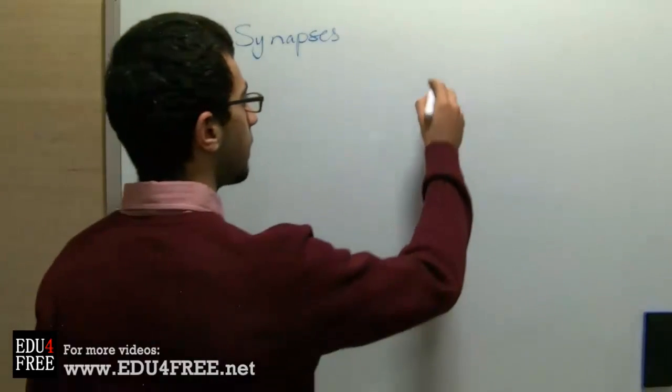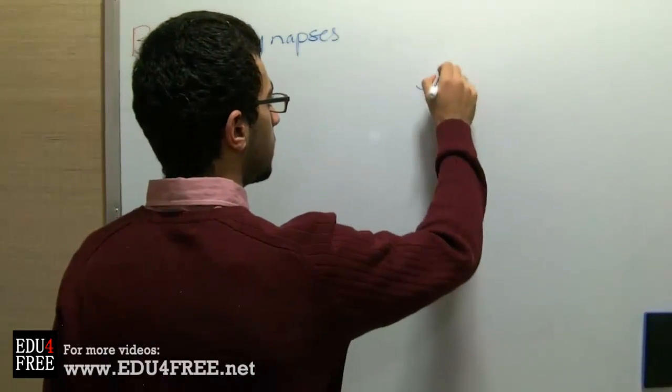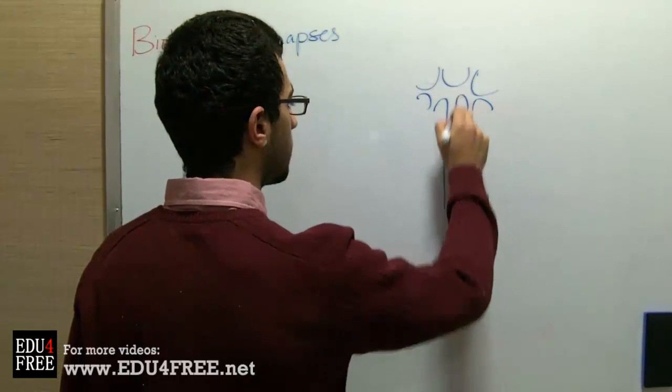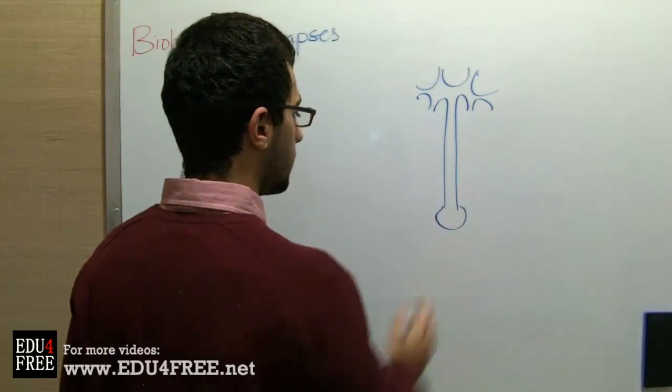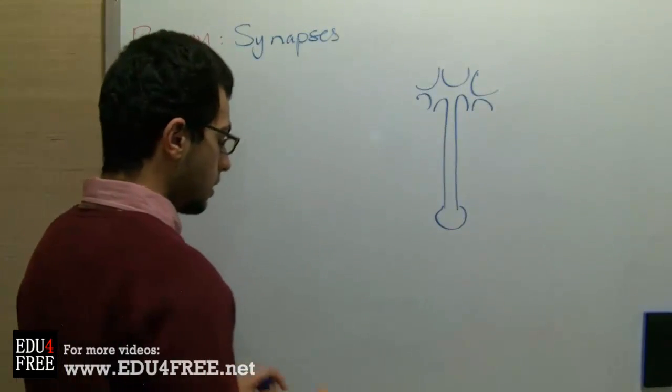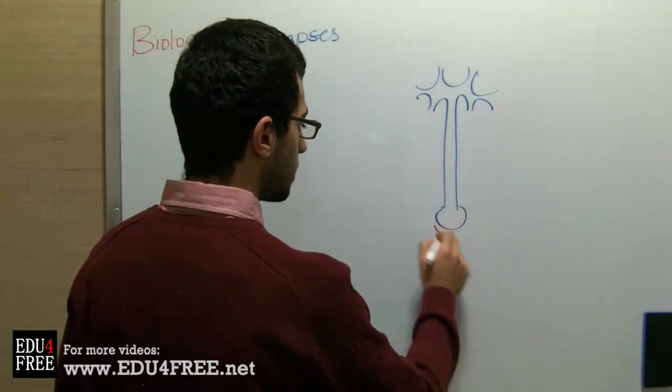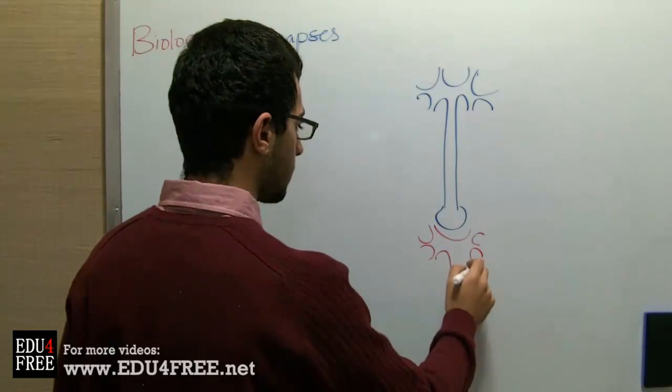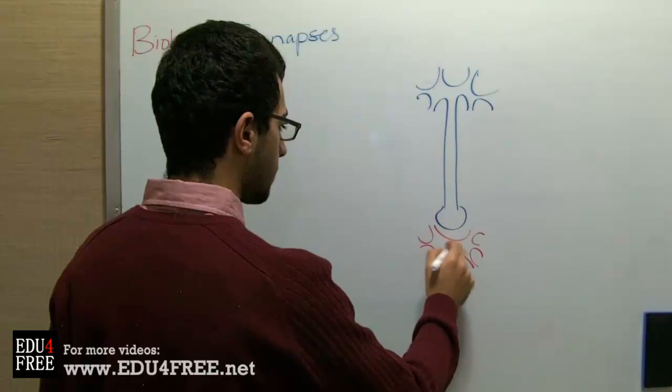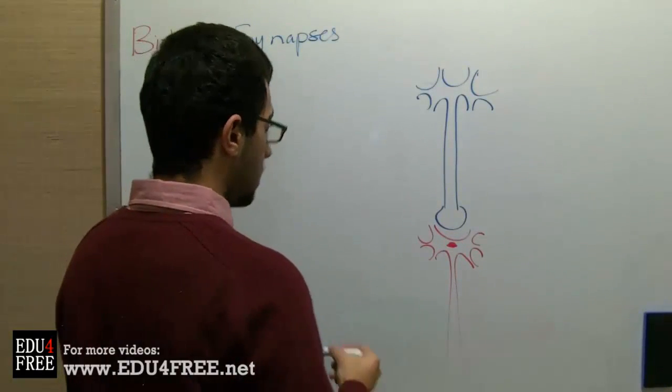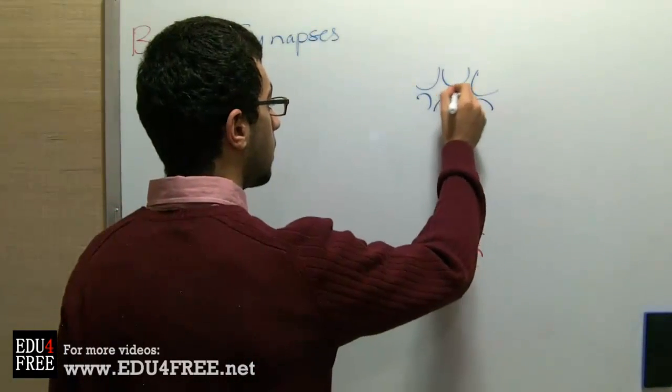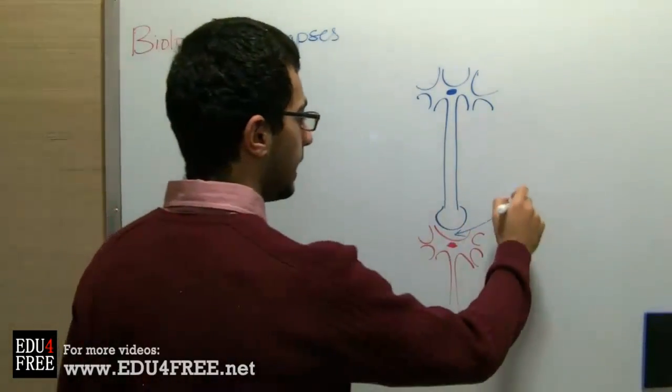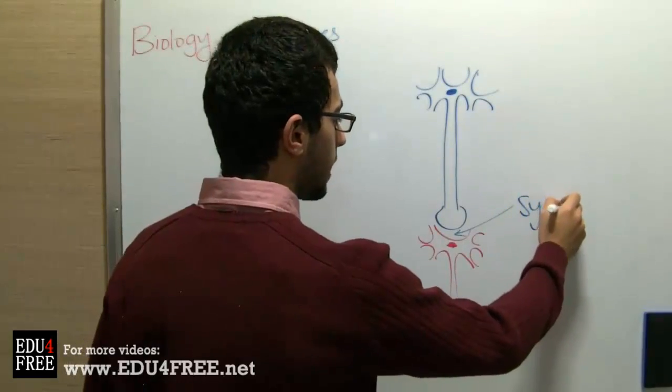For example, if we have a neuron like that and this is the following neuron. So this gap here between the two neurons is called a synapse.